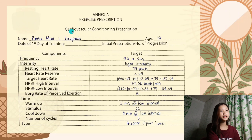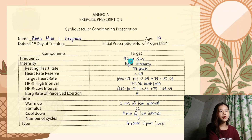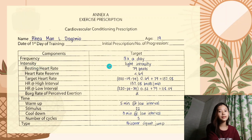First, my cardiovascular conditioning prescription. For frequency, it is three times a week. I chose Monday, Wednesday, and Thursday as my target days. Next is intensity — I chose light intensity.